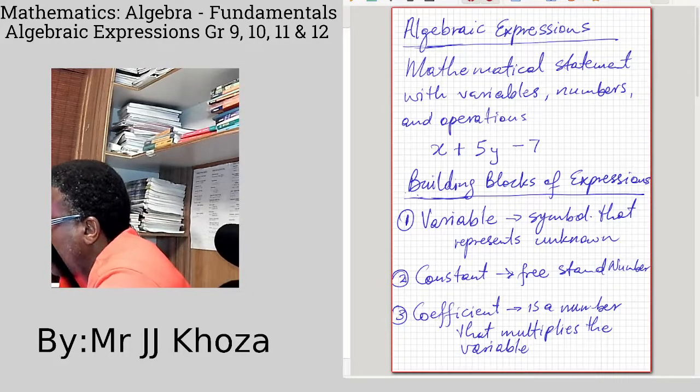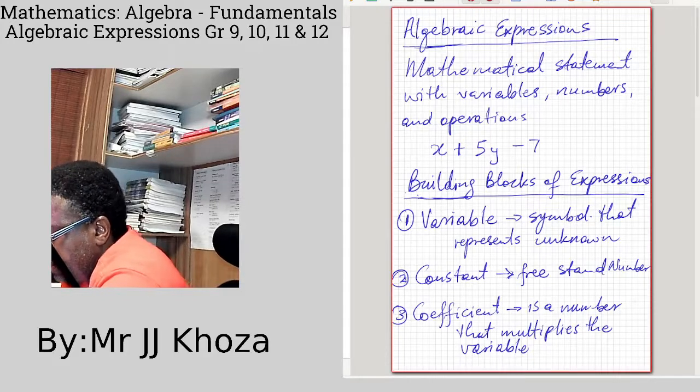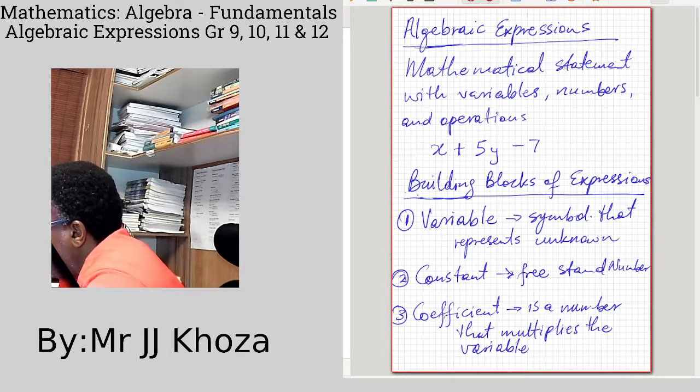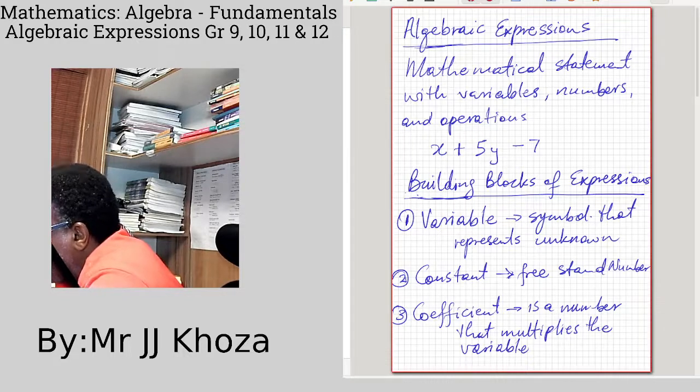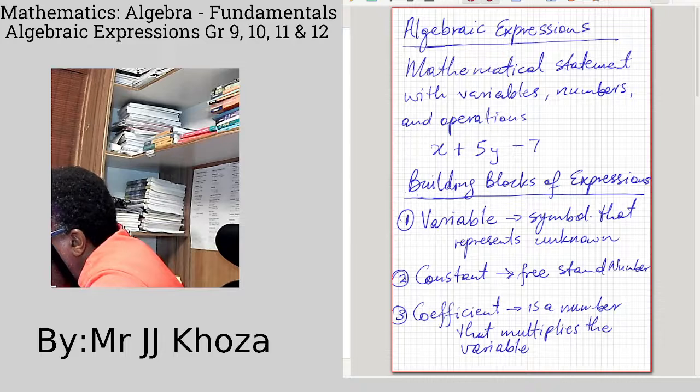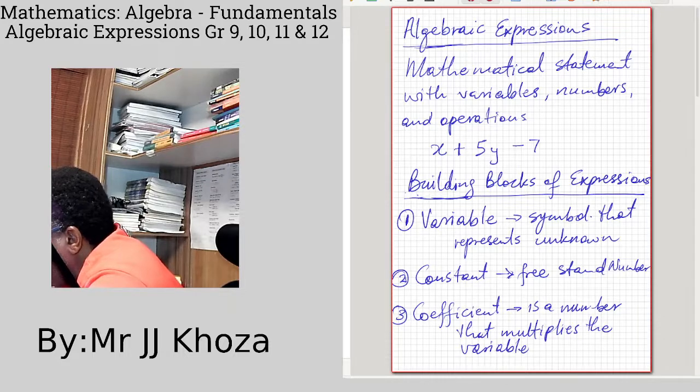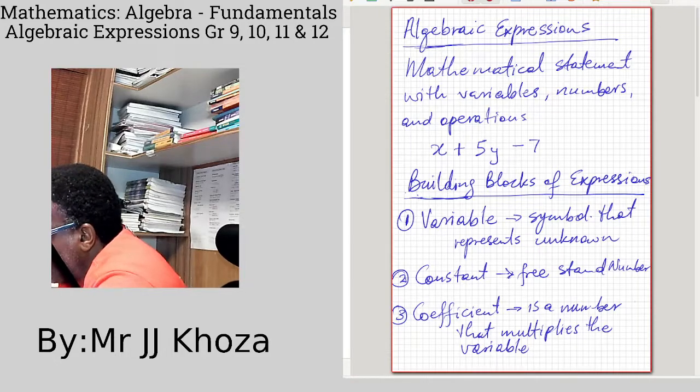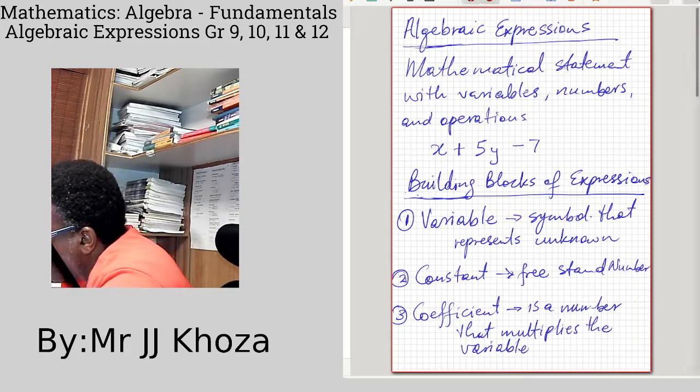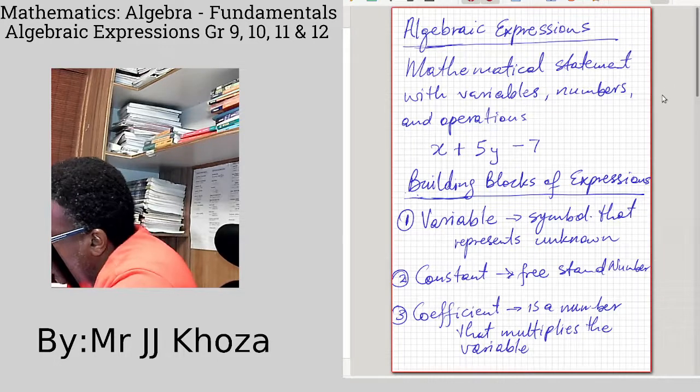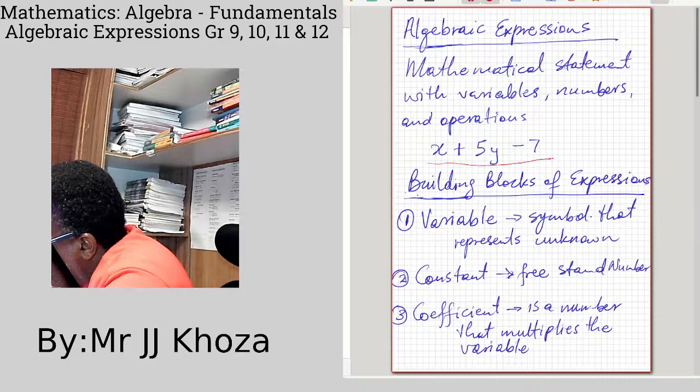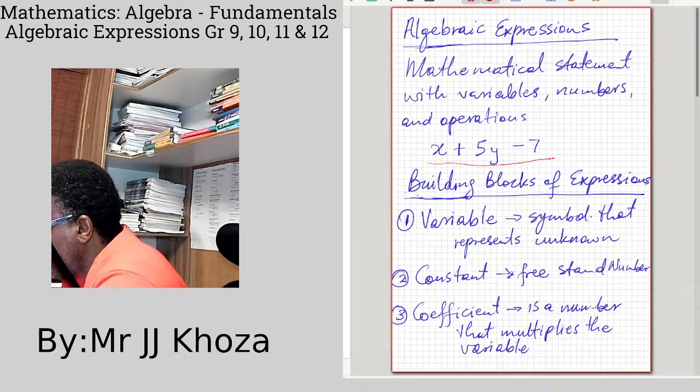We're now talking about algebraic expressions. An algebraic expression is a mathematical statement with variables, numbers, and operations. Numbers are constants and coefficients, and operations include plus, minus, division, and multiplication. Here is an example of an expression: x plus 5y minus 7.